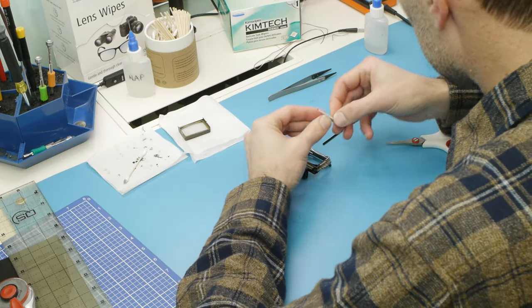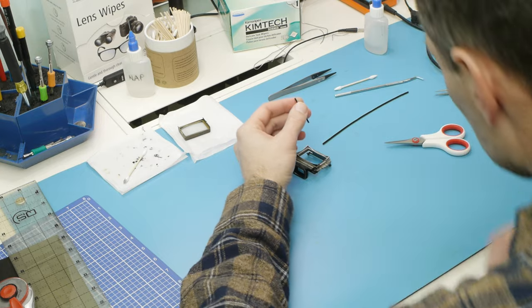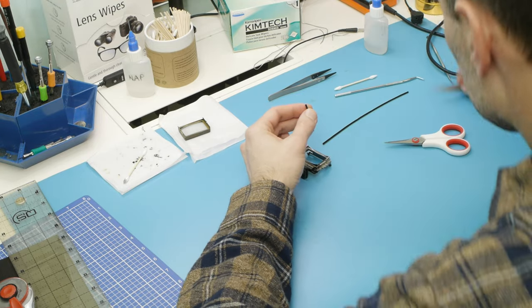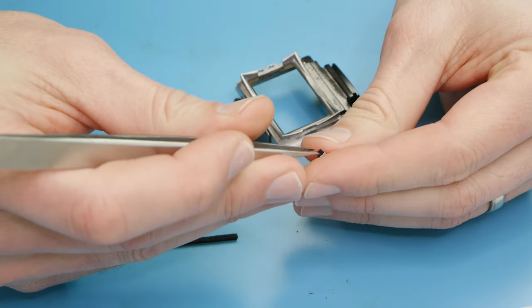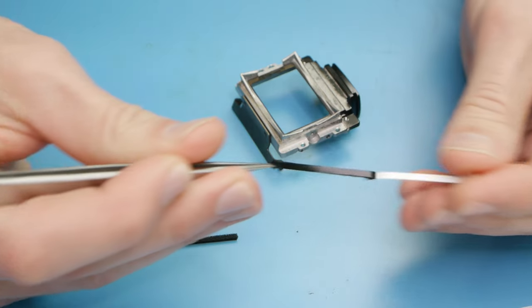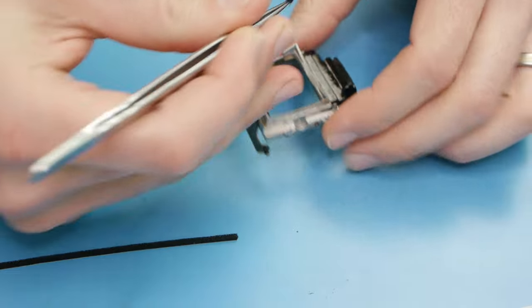The foam that I'm using here is an open cell foam as opposed to a closed cell foam. The main difference is just that it's really squishy. It can be compressed into small gaps without putting a ton of force on the surrounding parts, which is really useful for the viewfinder assembly.